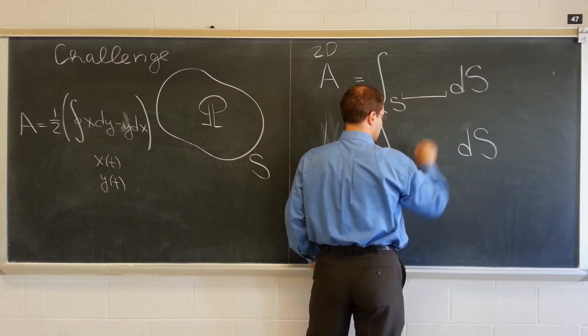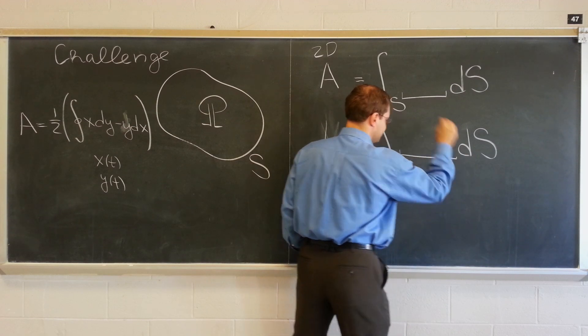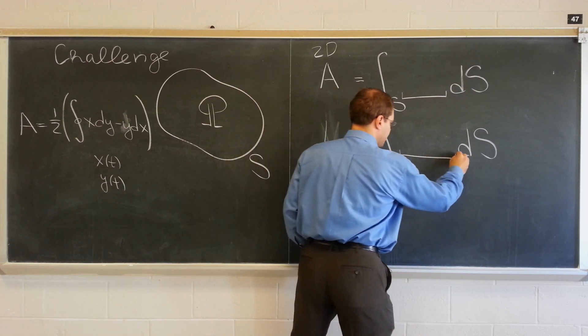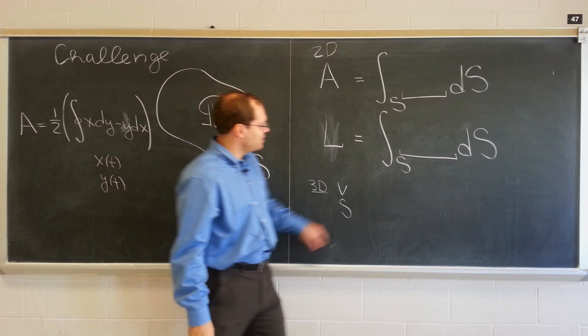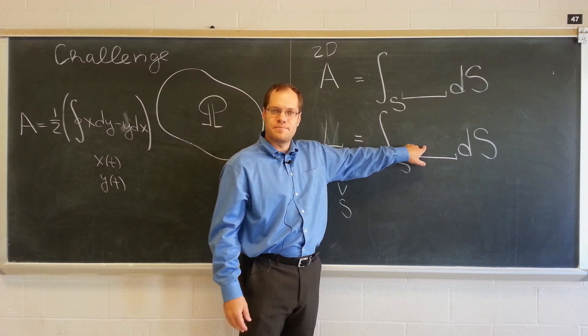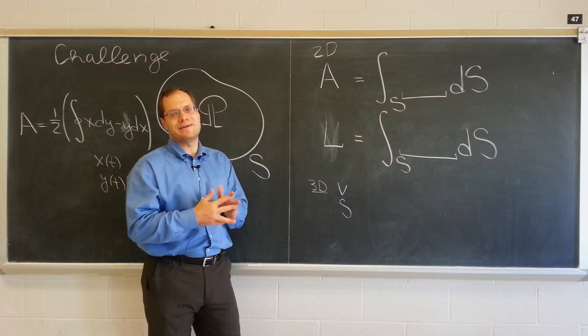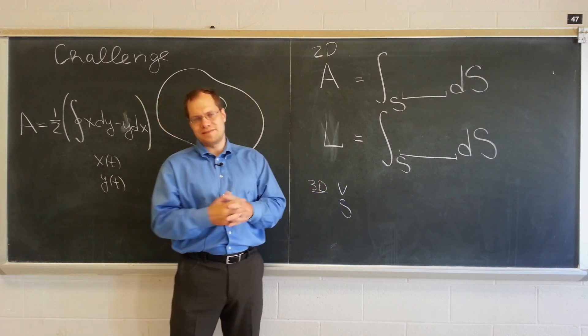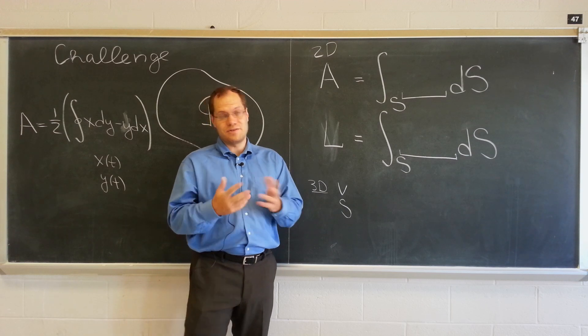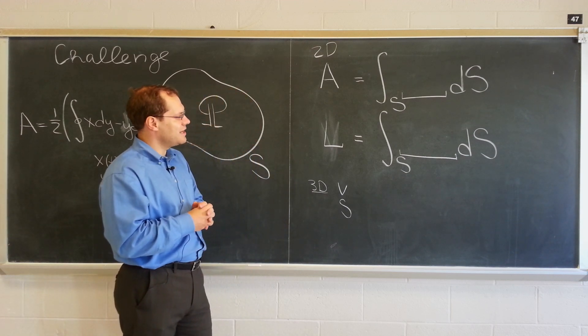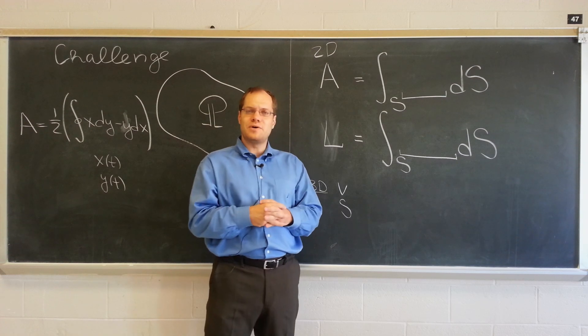And, the only question is, what goes here? That's the only question. Okay. And, like I was saying, one of the possible things you can put in here is one. Because the integral of one over the boundary is, of course, either the arc length of the boundary or the surface area of the boundary. So, that's one of the things. That's one of the answers and a perfectly good one.